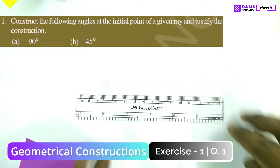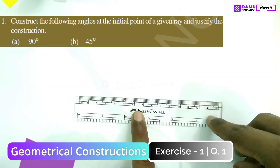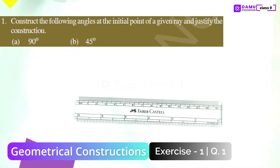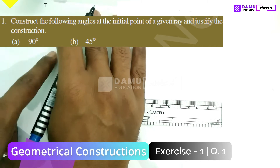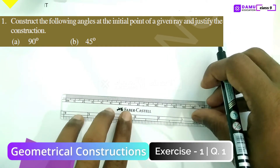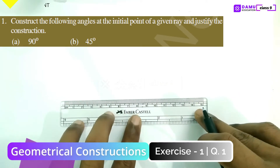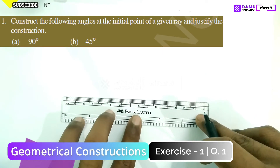Hello viewers, thanks for watching our videos. If not yet subscribed, please subscribe and click the bell icon. In this module we are going to discuss: construct the following angles at the initial point of a given ray and justify the construction. First, 90 degrees, and second, 45 degrees. We have to draw one ray, whatever the length, so start from here, keeping your scale horizontally.